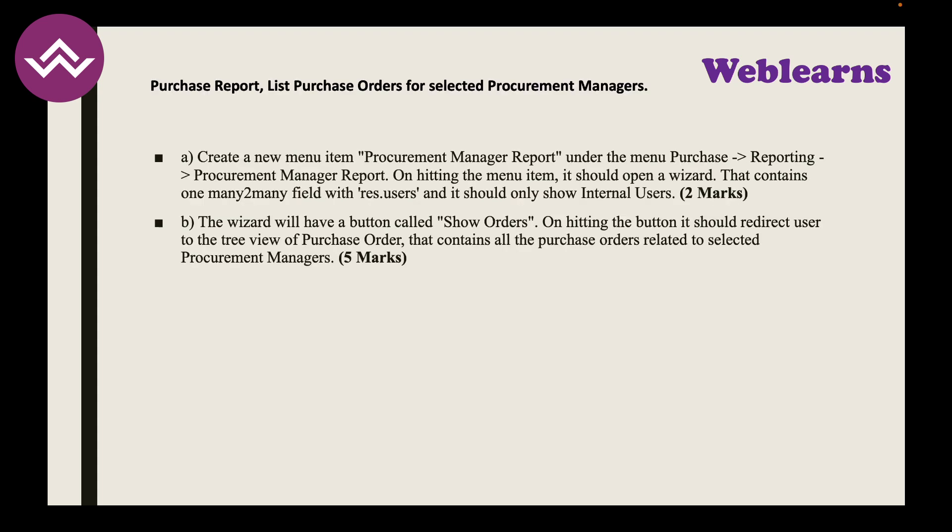Task G: In purchase reports, create a new menu item 'Procurement Management Report' under Purchase > Reporting. On hitting the menu item, it should open a wizard containing a many-to-many field with res.users, showing only internal users — that's two marks. The wizard will have a button called 'Show Orders'. On clicking it, it should redirect the user to the tree view of purchase orders containing all orders related to the selected procurement managers. That's five marks.